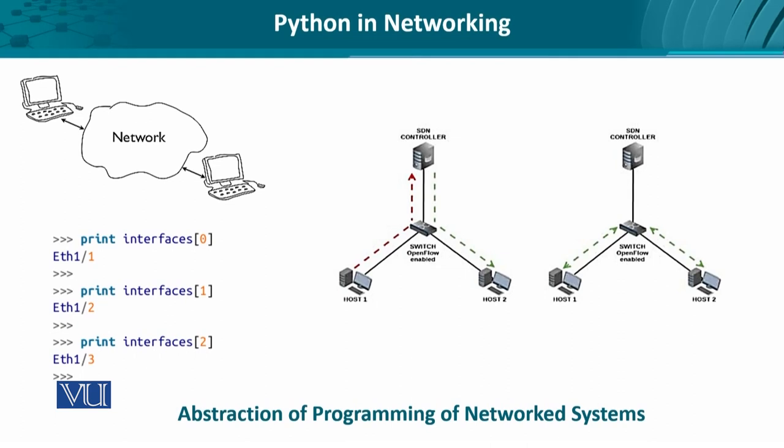Let's take an abstract-level view of what network programming is about. At the highest level of abstraction, network programming is about connectivity of end hosts with the network. In modern times, we think of it as software-defined networking — the decoupling of the forwarding and control planes in the form of a controller and a switch.